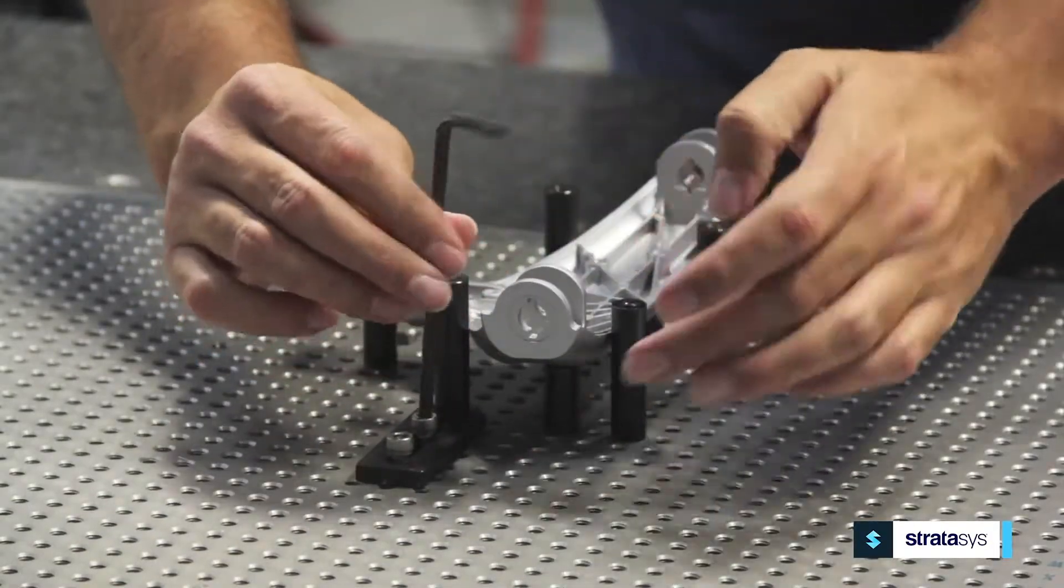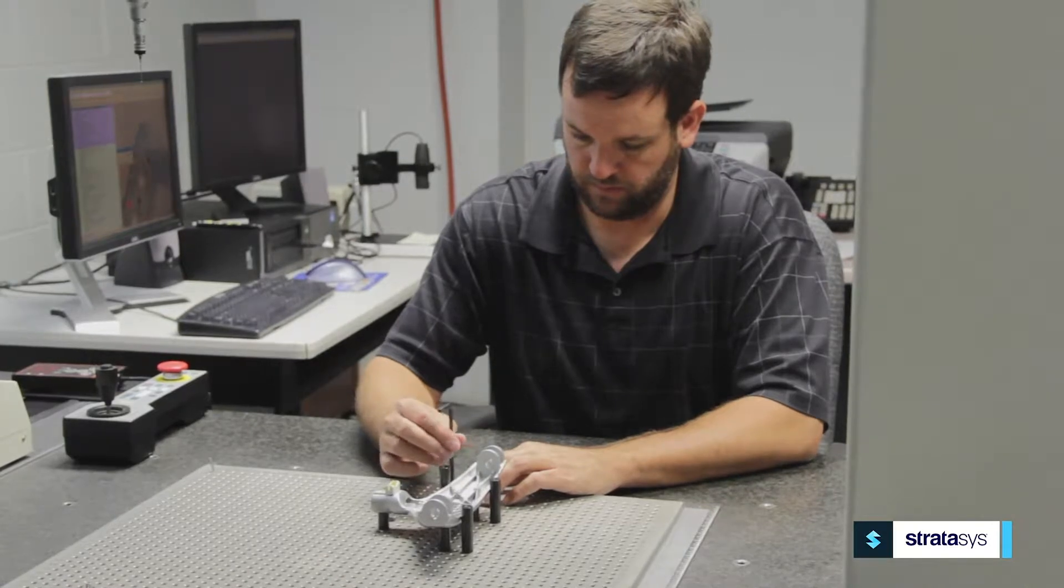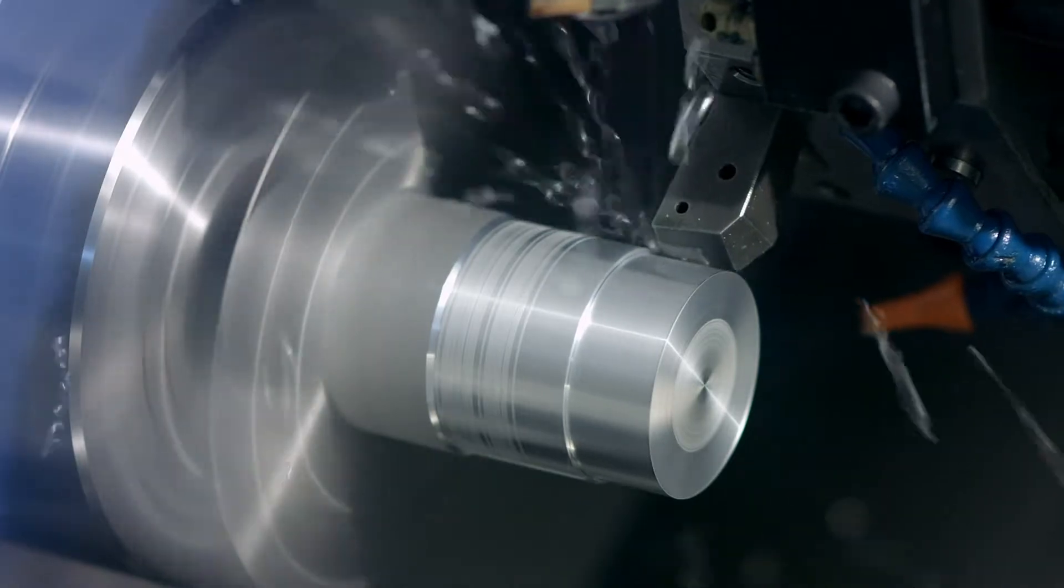Some of the biggest pain points when it comes to assembling inspection fixtures traditionally is the tolerances that can stack up when doing assemblies. In addition, it can be very expensive to machine all the parts required to make the jigs.